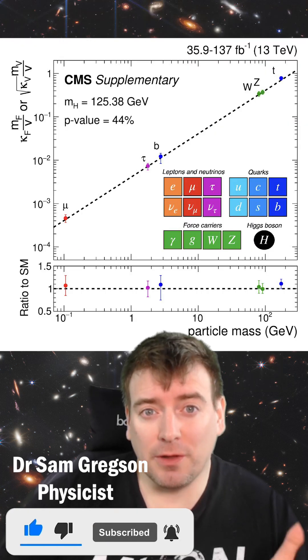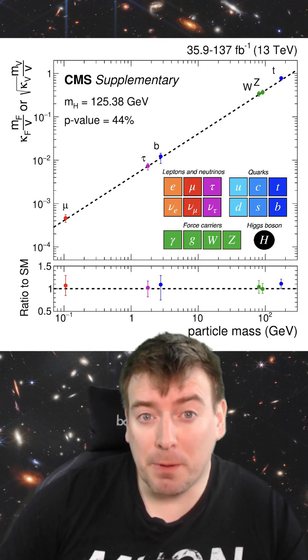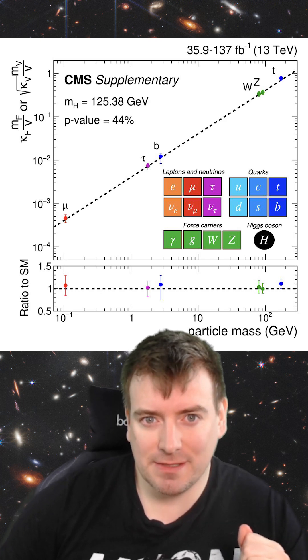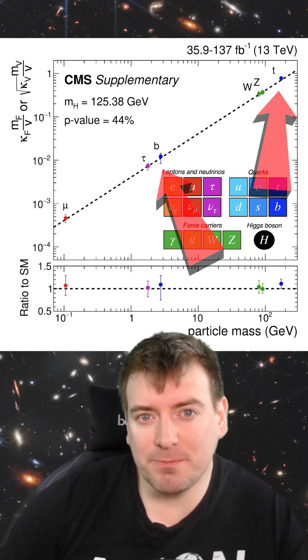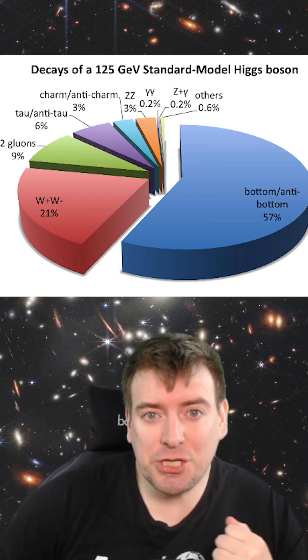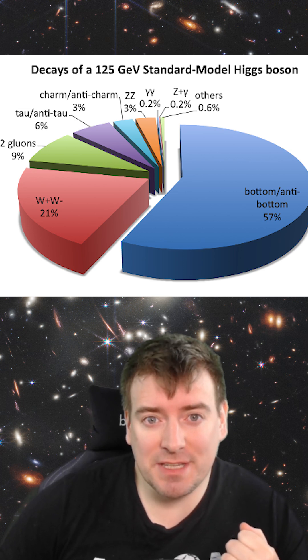In the standard model, the Higgs boson interacts with all quarks with a strength proportional to the quark's mass. However, we've only verified this proportionality for the heaviest top and bottom quarks. The Higgs only decays into a charm-anti-charm quark pair 3% of the time.